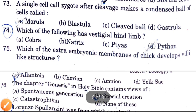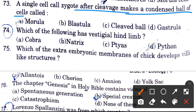A single cell called zygote after cleavage makes a condensed ball of cells called — options are morula, blastula, cleaved ball, and gastrula. The answer is morula.